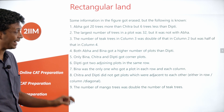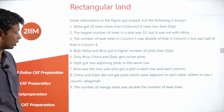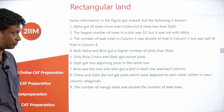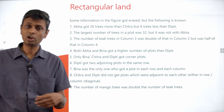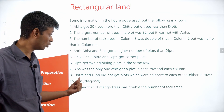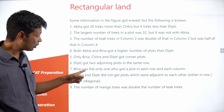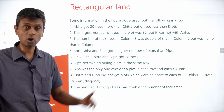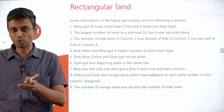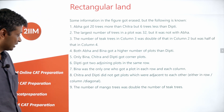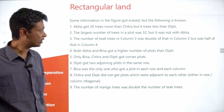Bina was the only one who got a plot in each row and each column. Chitra and Deepti did not get plots adjacent to each other — in row, column, or diagonal. The number of mango trees was double the number of teak trees. There are a lot of constraints, and we need to figure out which ones to use first.